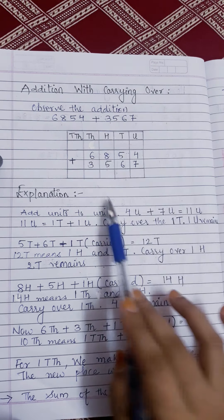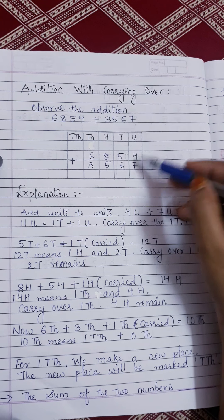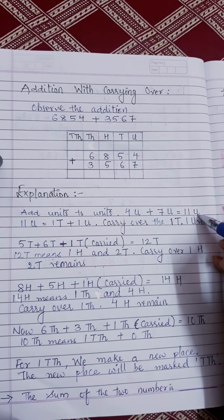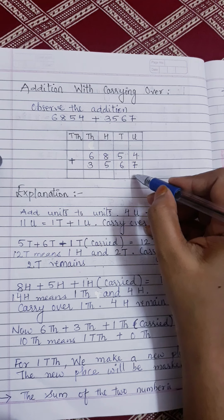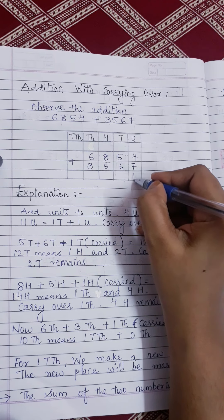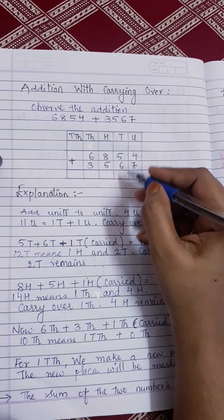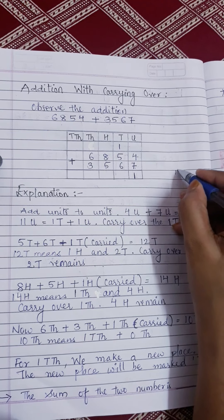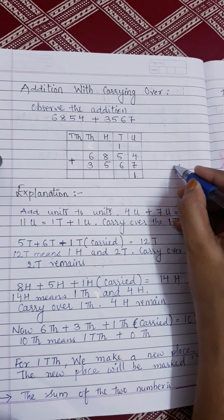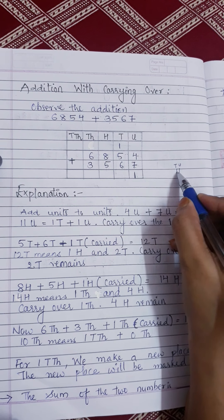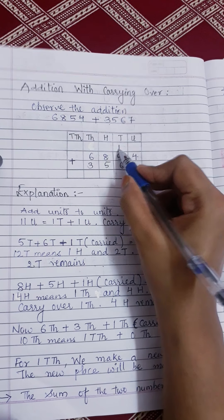Here is the explanation. Add unit to unit. Four units plus seven units is equal to eleven units. But we cannot write eleven here. We write one and carry the ten. Eleven: this is the unit number and this is the tens number. We write the unit number here and carry the tens over.